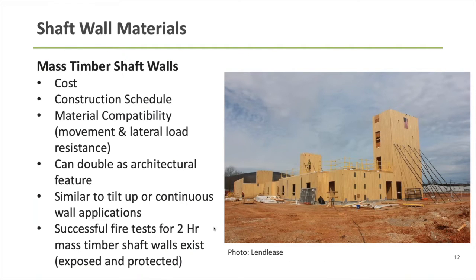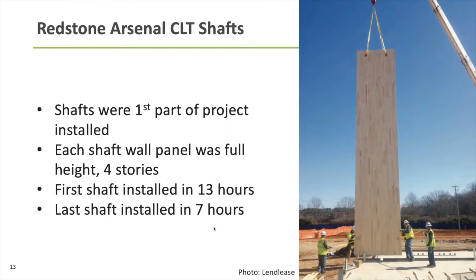The reasons why you might consider mass timber are many of the same as for light frame wood shaft walls — cost and construction schedule. With mass timber, there's also a unique aspect where instead of installing wood stud walls and covering them with gypsum, mass timber has the capability of providing fire resistance ratings inherent in its given thickness. That means you could potentially leave it exposed on the interior of the shaft, highlight that as an architectural feature, and still meet the building code requirements for fire resistance ratings.